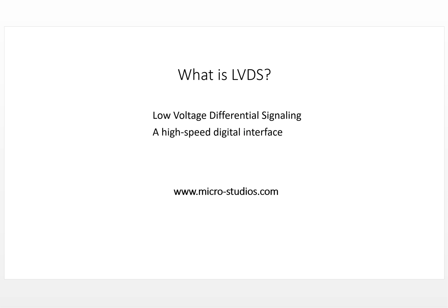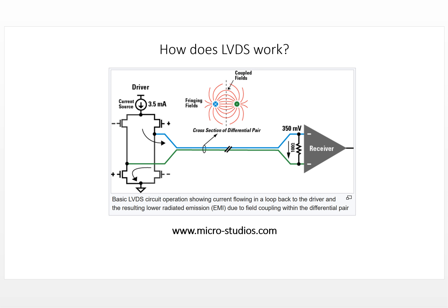Let's take a look at how LVDS works. This is a model for the LVDS protocol. You can see here the driver and the receiver. The driver provides a constant current source of 3.5mA. When we open certain transistors, the current goes through the trace and through a 100-ohm termination resistor.